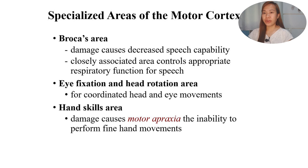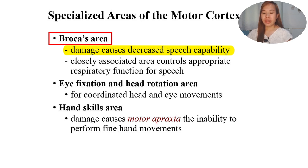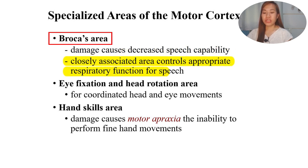There are specialized areas of the motor cortex. We have Broca's area - when damaged, it will cause decreased speech capability. A useful mnemonic is BMW: Broca's area is for motor control of speech, while Wernicke's area is for sensory control of speech. When Broca's area is damaged, it will cause decreased speech capability. It is closely associated with the area that controls appropriate respiratory function for speech.